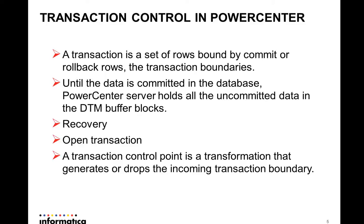In Power Center, all incoming rows from the source need not be bound by a transaction boundary — those rows form an open transaction. You can choose to commit at end of file or to rollback an open transaction when you configure the session. We control transactions within Informatica by using transaction control points at the mapping level — transformations like the Transaction Control Transformation (TCT), and some active transformations like aggregator, joiner, etc. You can also control transactions using session properties like commit interval, commit interval type, commit at end of file, or rollback at end of file.